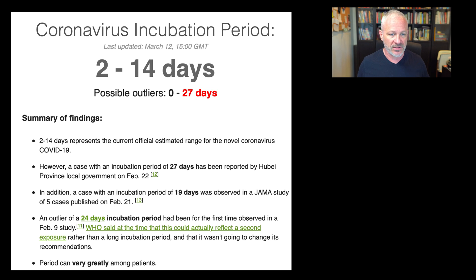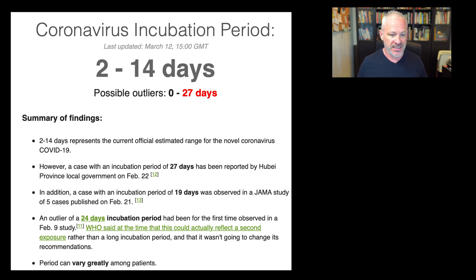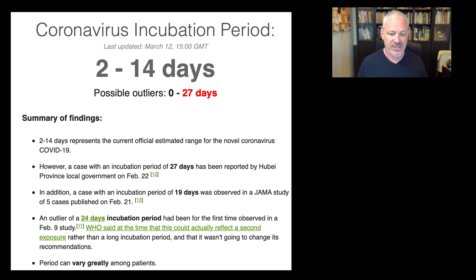This was last updated about two weeks ago, but it's the best I could find. Two to 14 days is what's considered average or normal for COVID-19. There have been outliers of as much as 27 days that the Hubei province in China reported. In addition, in the Journal of American Medical Association — JAMA — they also observed a 19-day case. But for the most part, it's two to 14 days.